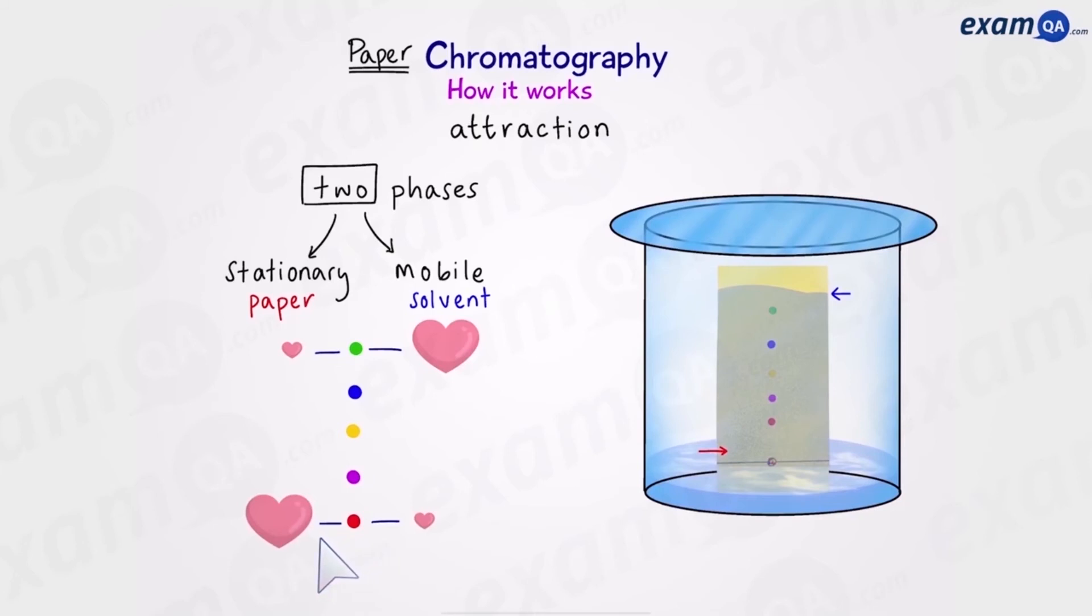Conversely the red spot really loves the stationary phase and doesn't love the mobile phase. And you can tell that because it hasn't moved as much. And something like the yellow spot hasn't got preference for either. That's why it's in the middle. So remember if it's more soluble it will go higher.